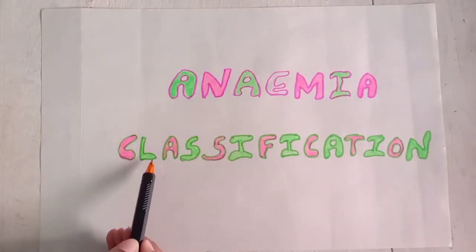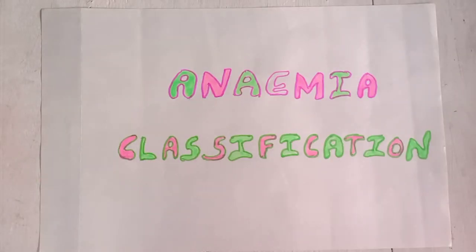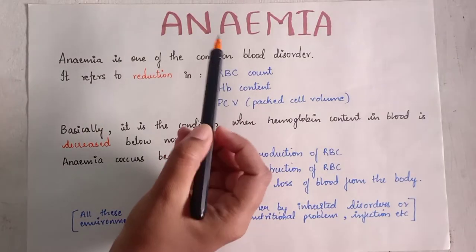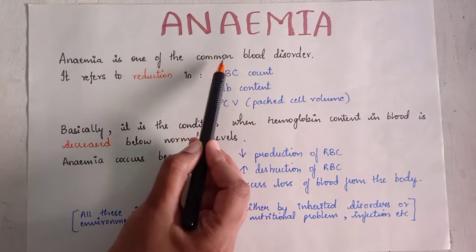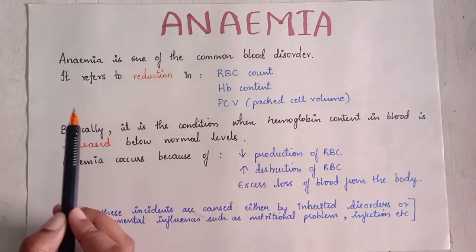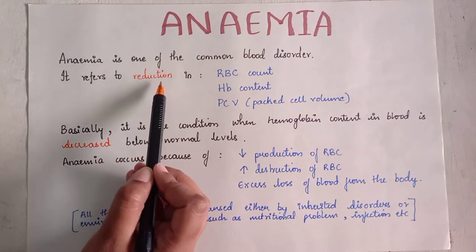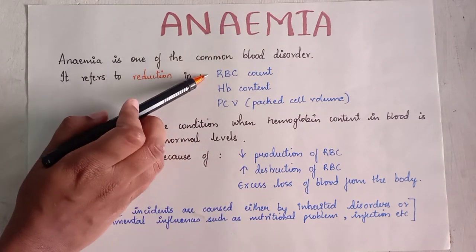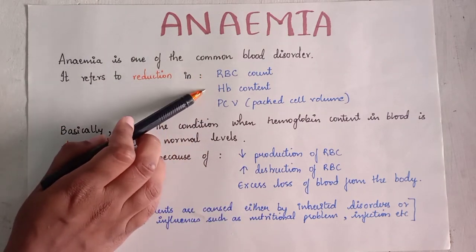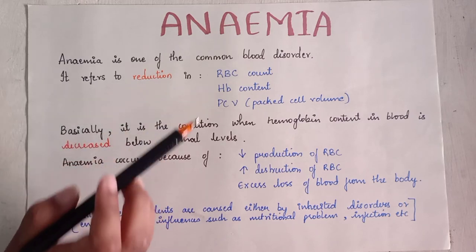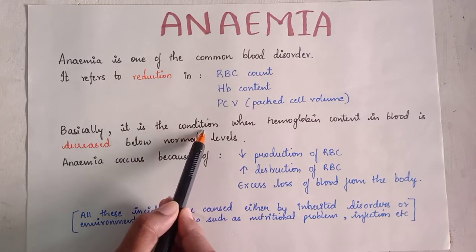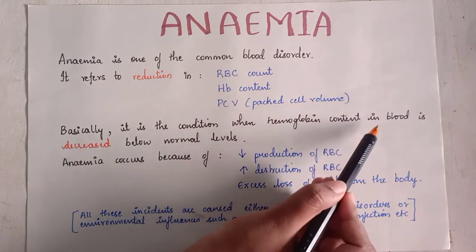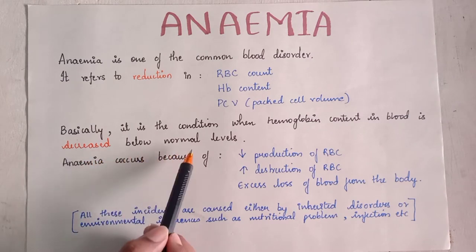Let's begin. Anemia and its classification. Anemia is one of the common blood disorders. It refers to a reduction in red blood cell count, hemoglobin content, and packed cell volume — all are reduced. Basically, it is the condition when hemoglobin content in blood is decreased below the normal levels.